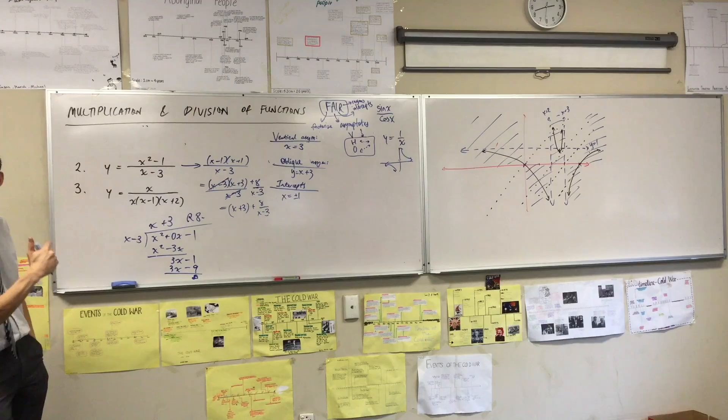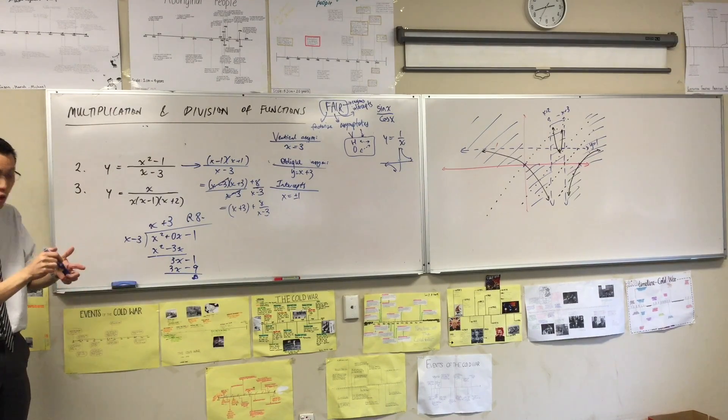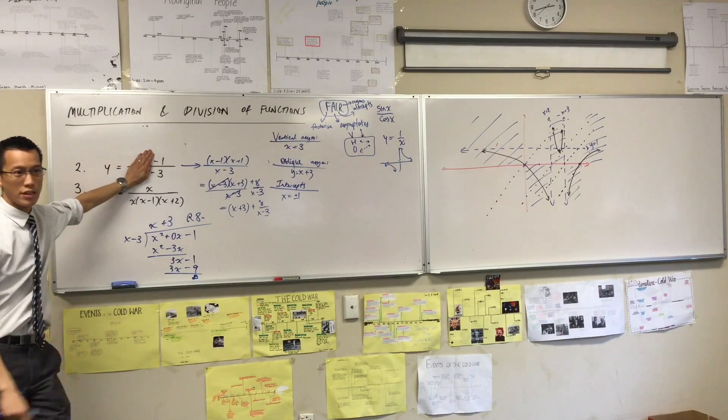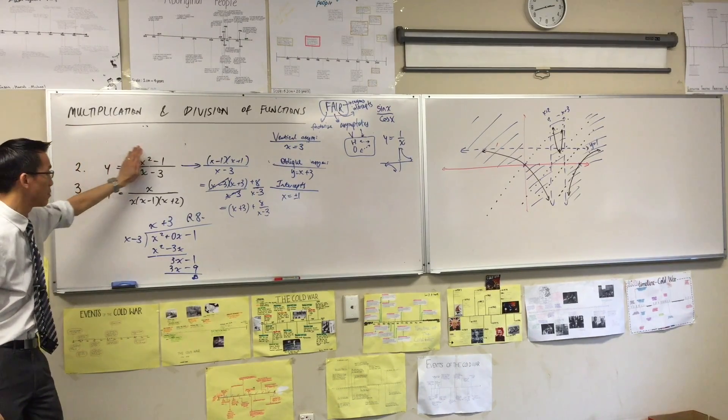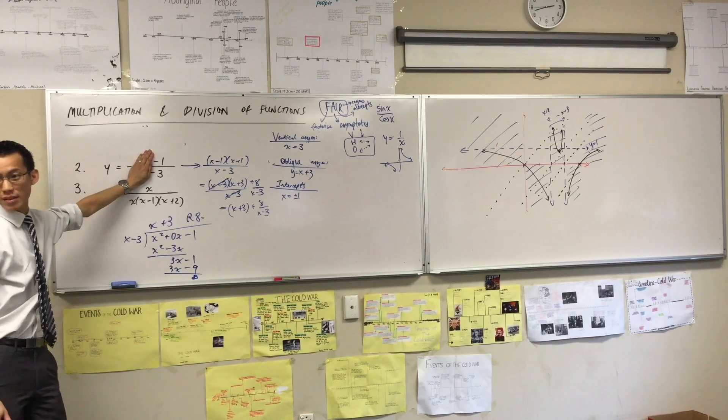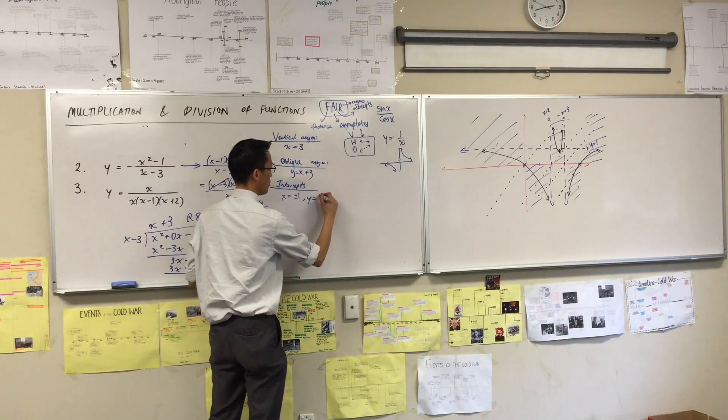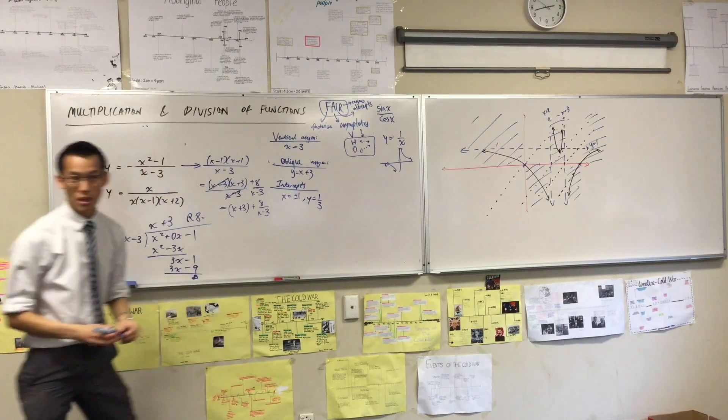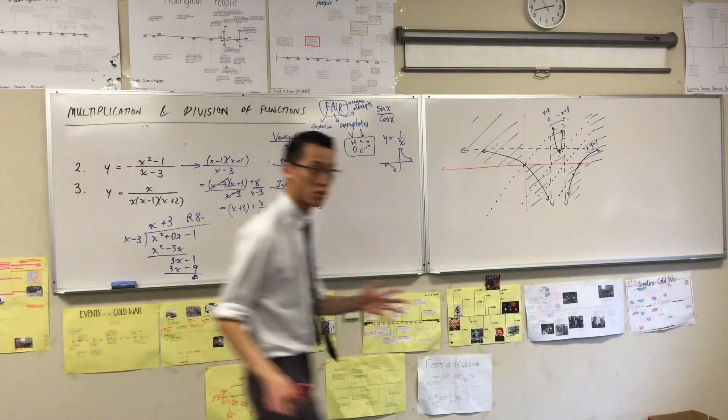How do I find a y-intercept? I'm going to substitute in x equals zero. And in fact the original unfactorized form makes that easiest. There it is. That's me doing x equals zero. All my x terms just disappear. So you've got minus one over minus three which gives you one third. I've lined up all my ducks, I'm going to draw some axes now.